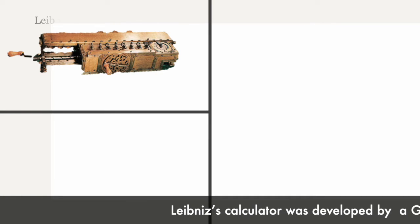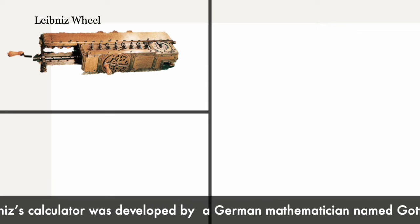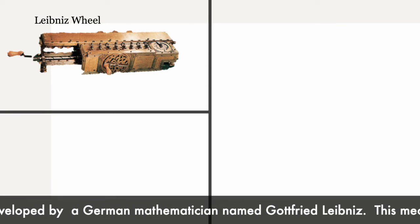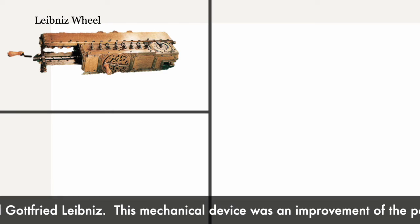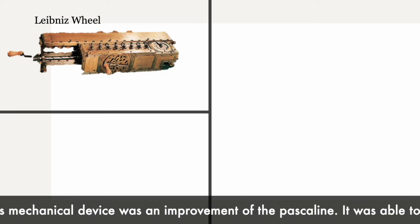Leibniz's calculator was developed by a German mathematician named Gottfried Leibniz. This mechanical device was an improvement of the Pascaline. It was able to multiply and divide.